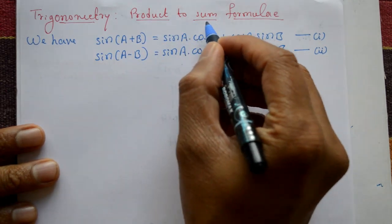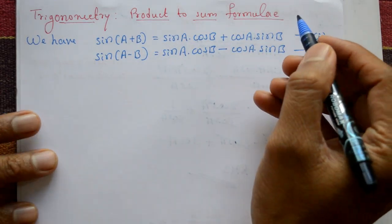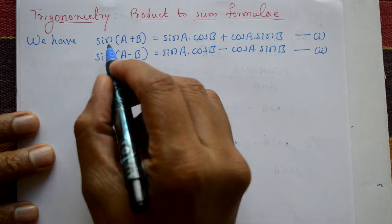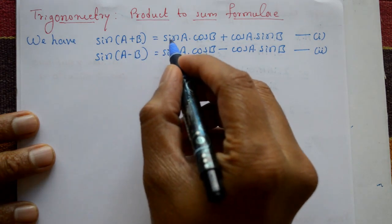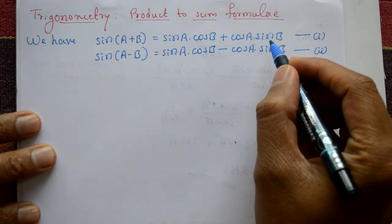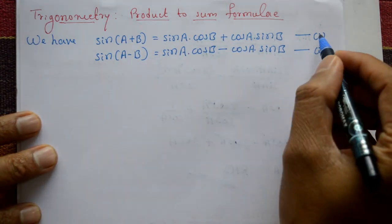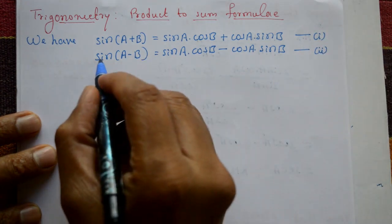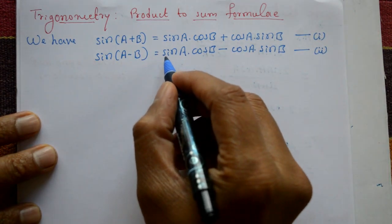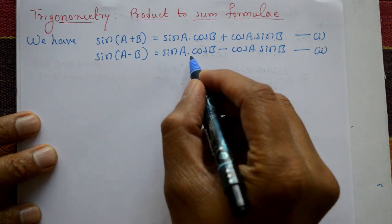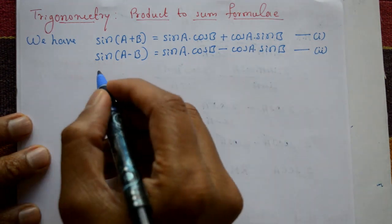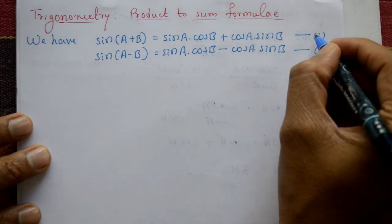Trigonometry product-to-sum formulae. We have two formulas: sin(a + b) = sin a · cos b + cos a · sin b — equation number one. The second equation is sin(a − b) = sin a · cos b − cos a · sin b.